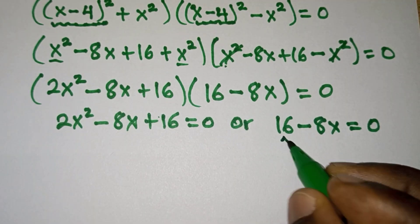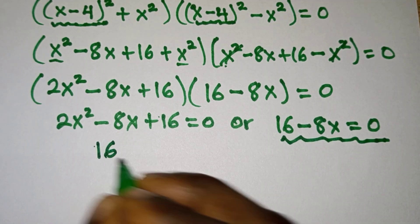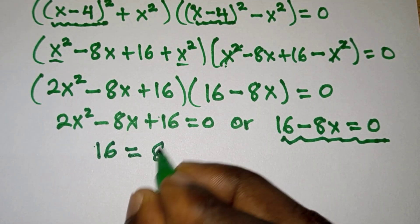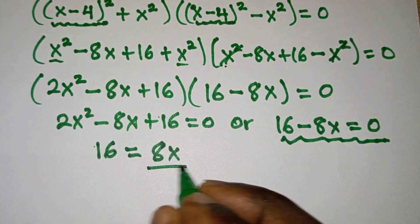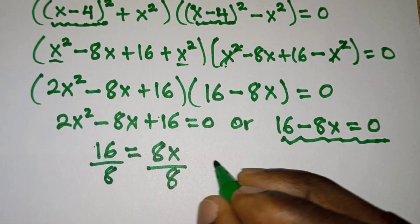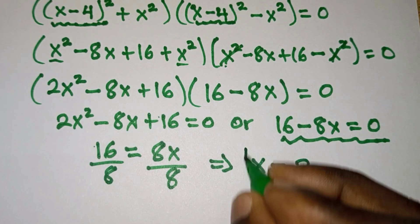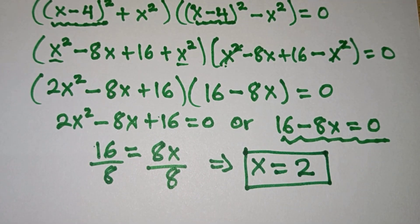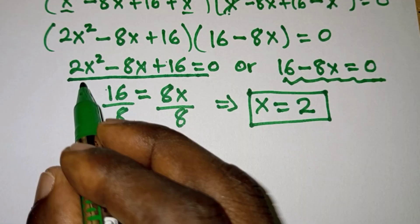So at this point we can say that 2x squared minus 8x plus 16 equals 0, or 16 minus 8x equals 0. Let's consider the linear equation first. From 16 minus 8x equals 0, we get 16 equals 8x, and dividing each side by 8, we get x equals 2 as one of the solutions.